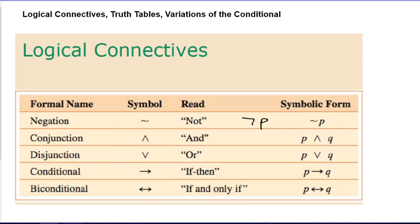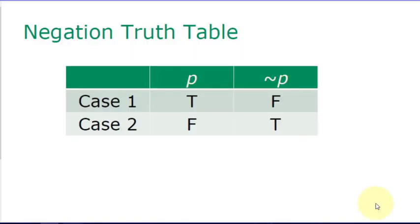Now let's go on to truth tables, looking at how these symbols operate on statements. P is like a variable — it could represent 'all dogs go to heaven' or 'some lawyers use logic,' any statement to which we can assign a truth value. If that truth value is true, the negation of P would be false, and if the statement is false, the negation would be true. Every truth table lists all different cases for all variables involved.